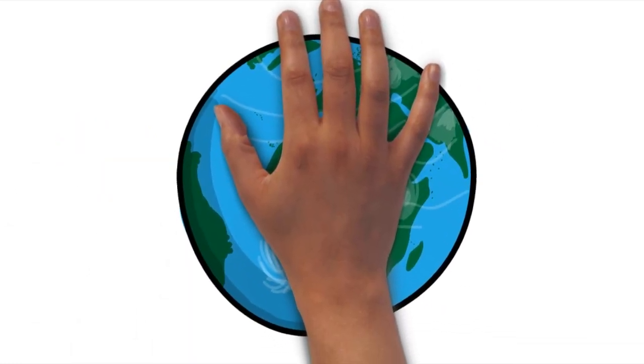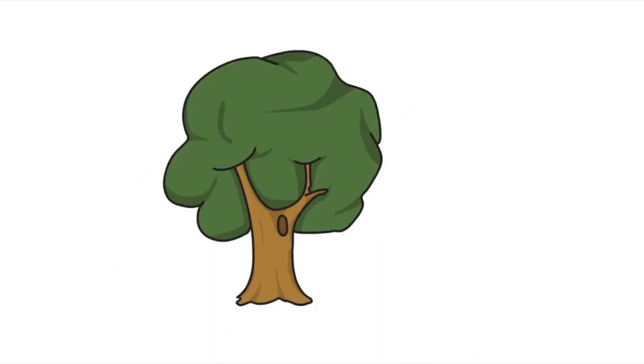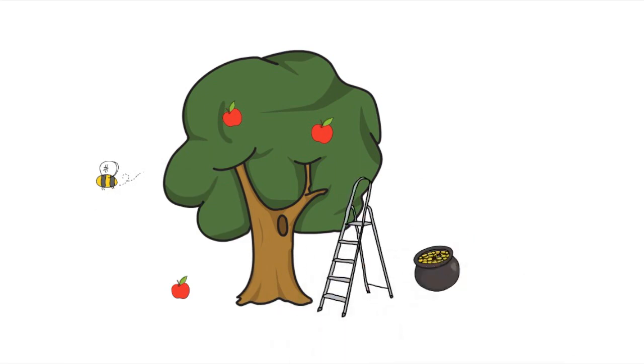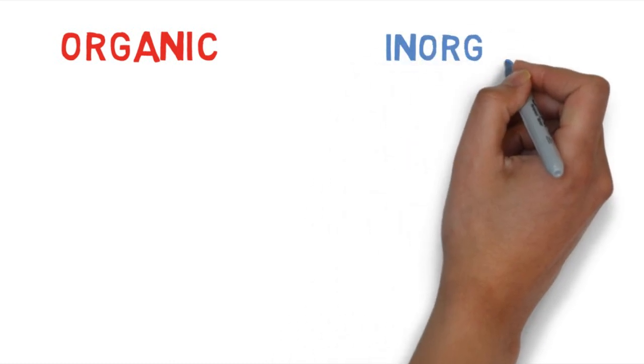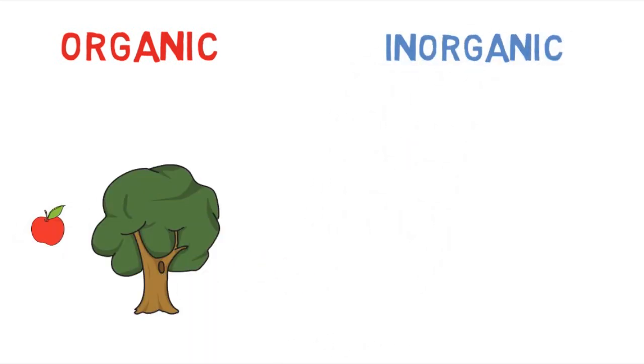It's a great big wonderful world and it's filled with stuff—all kinds of stuff. Some stuff is alive and some is not. A long time ago, people classified stuff that way. If it was alive or had been alive, it was called organic, and if it was not, it was labeled inorganic.